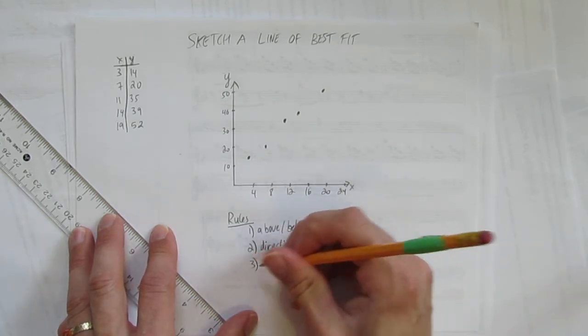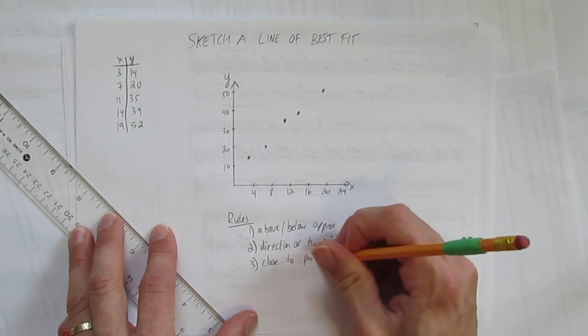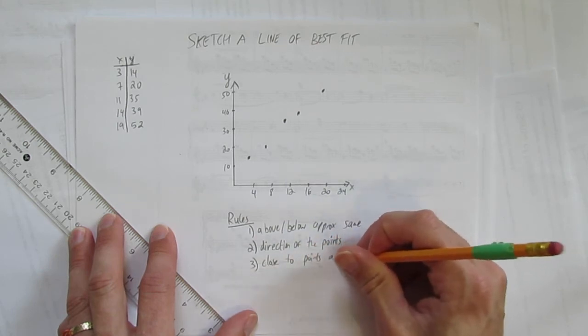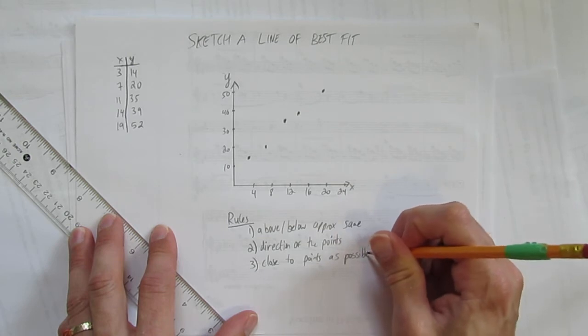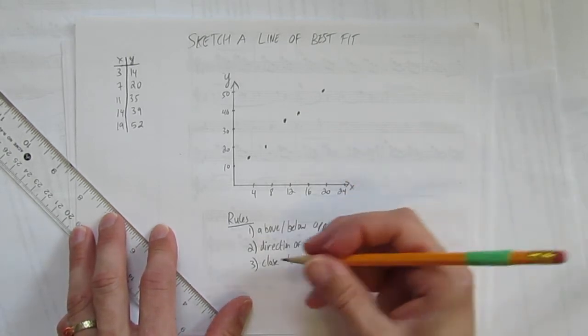Third rule, it should be as close to the points as possible. So as close as you can, try to fit them, the line of best fit as close to the points.